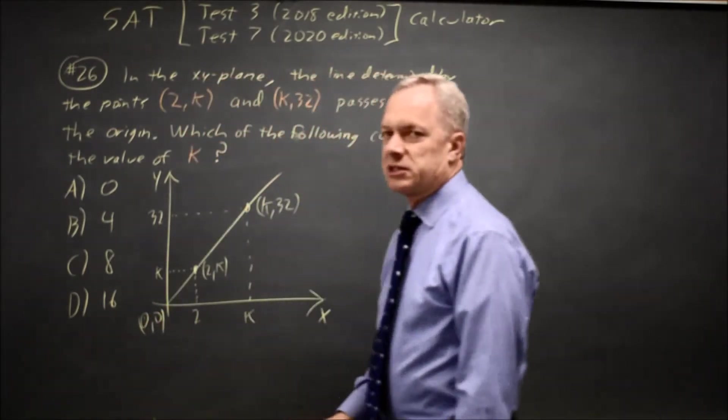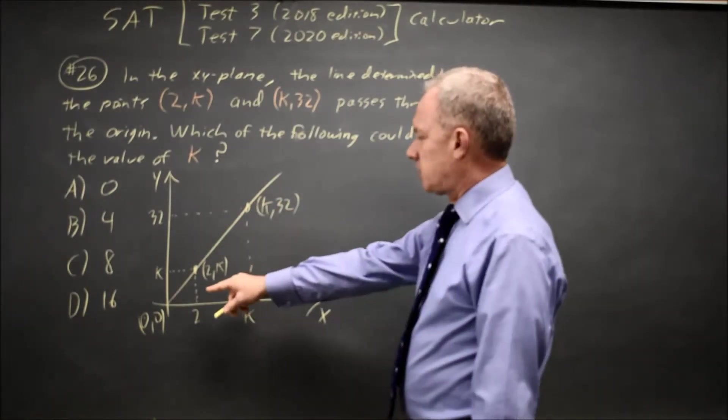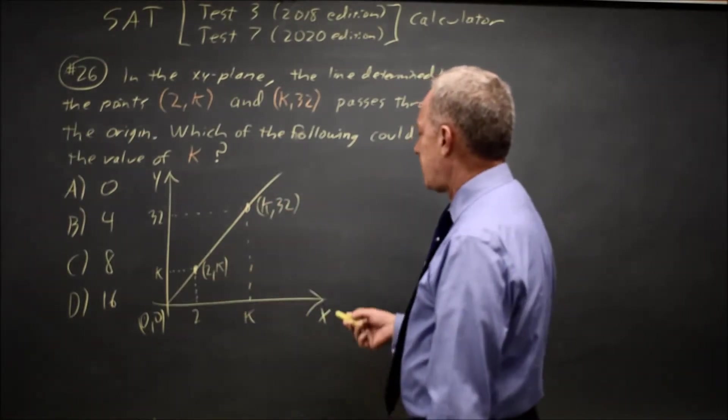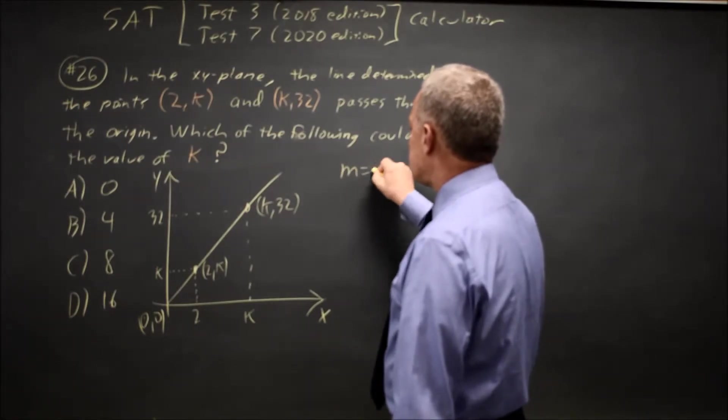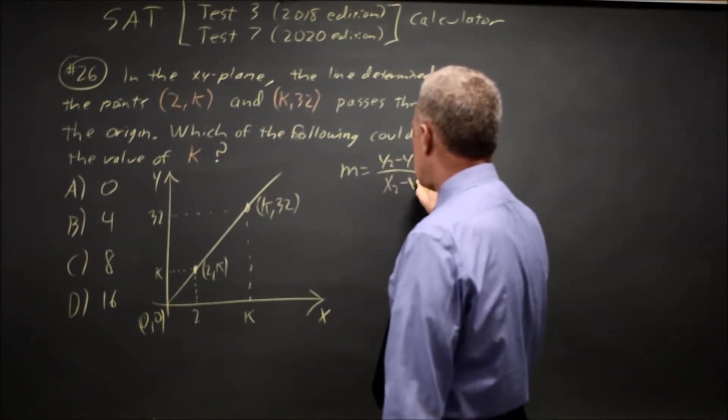And if they're all on the same line, the slope from the origin to (k, 32) equals the slope from the origin to (2, k). Remember your slope is y2 minus y1 over x2 minus x1.